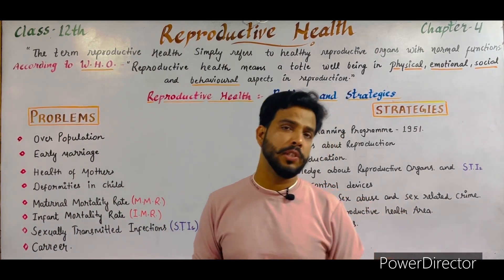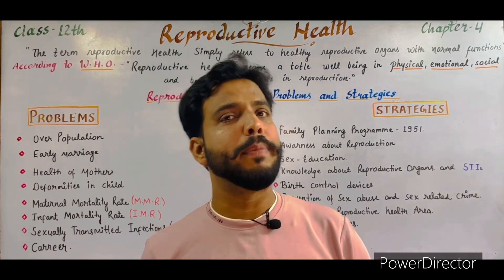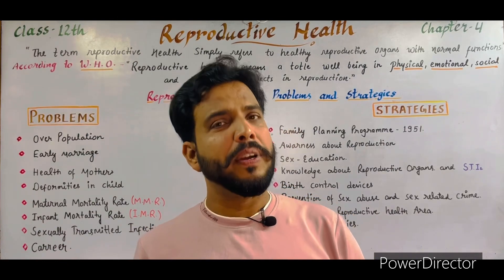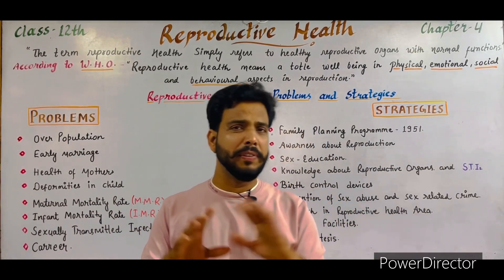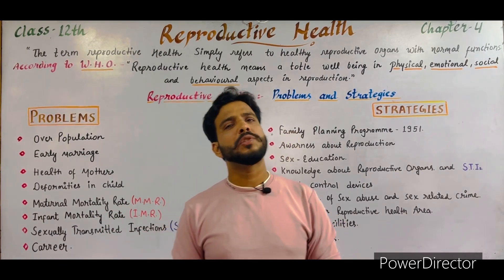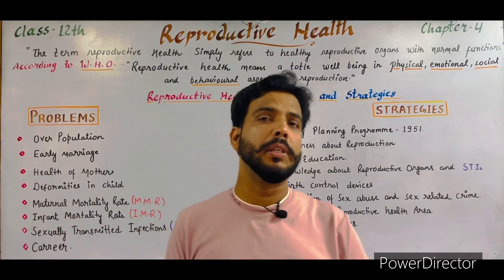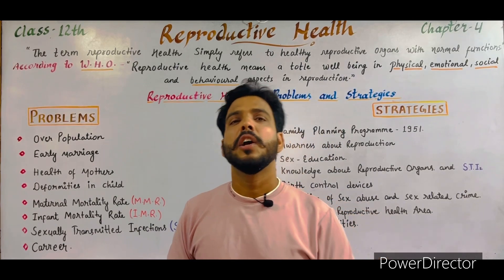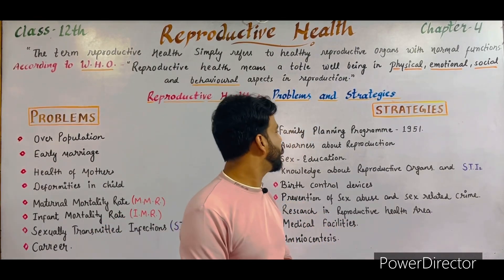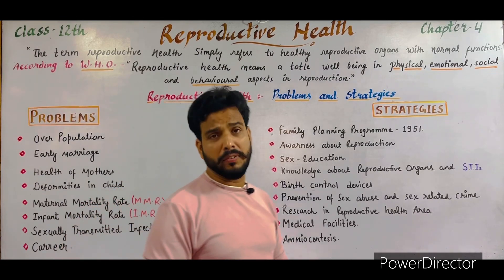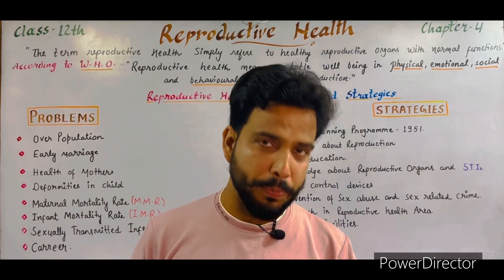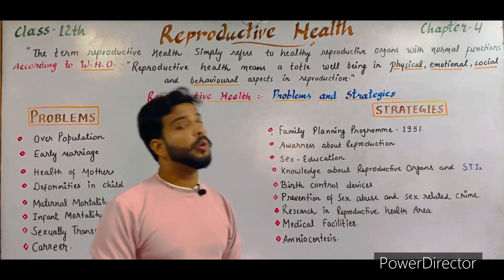The next strategy is awareness about reproduction. It is very important to know about our reproductive system and reproductive organs. A male must have complete knowledge about the testes, different glands, their secretions, and their hormones. Nowadays the Indian government is trying to spread awareness through print media, newspapers, social media, television, and radio. Family, parents, relatives, friends, and teachers may also be good sources of awareness about reproduction.